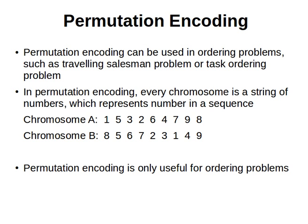Welcome back. We've seen binary encoding and the knapsack problem example. Now we move on to what is known as permutation encoding. Permutation encoding can be used in ordering problems — problems where the order of things is the solution, such as the well-known traveling salesman problem or task ordering problems.